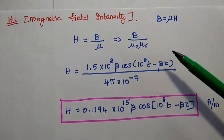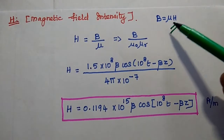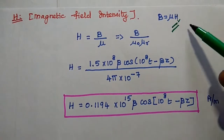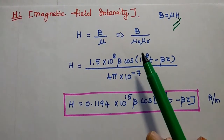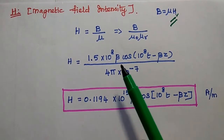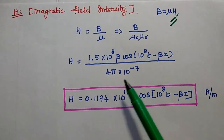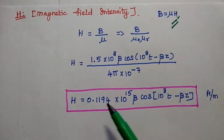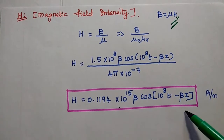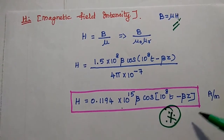Next we find the magnetic field intensity H using the relation B = μ H, so H = B/μ = B/(μ₀ μ_r). With μ_r = 1 and μ₀ = 4π × 10⁻⁷, substituting B gives H = [1.5β cos(10^8 t − β z)] / (4π × 10⁻⁷) â_y = 0.1194 × 10^15 · β cos(10^8 t − β z) â_y. This is the magnetic field intensity. This problem is very important and can be expected in university exams.